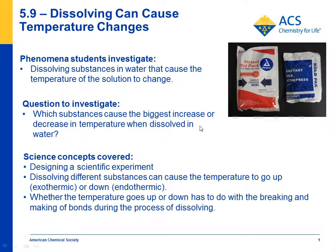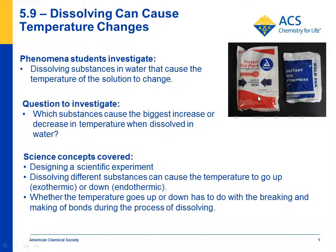In lesson 5.9, you can start off by activating a hot pack and a cold pack and passing them around the class, telling students that really all that's going on here is dissolving. Each pack has a pouch of water on the inside and a solute that gets dissolved. Depending on the type of pack, it could be magnesium sulfate for the hot pack and urea or another substance for the cold pack. The point is that dissolving can cause the solution to be hotter (exothermic) or colder (endothermic).